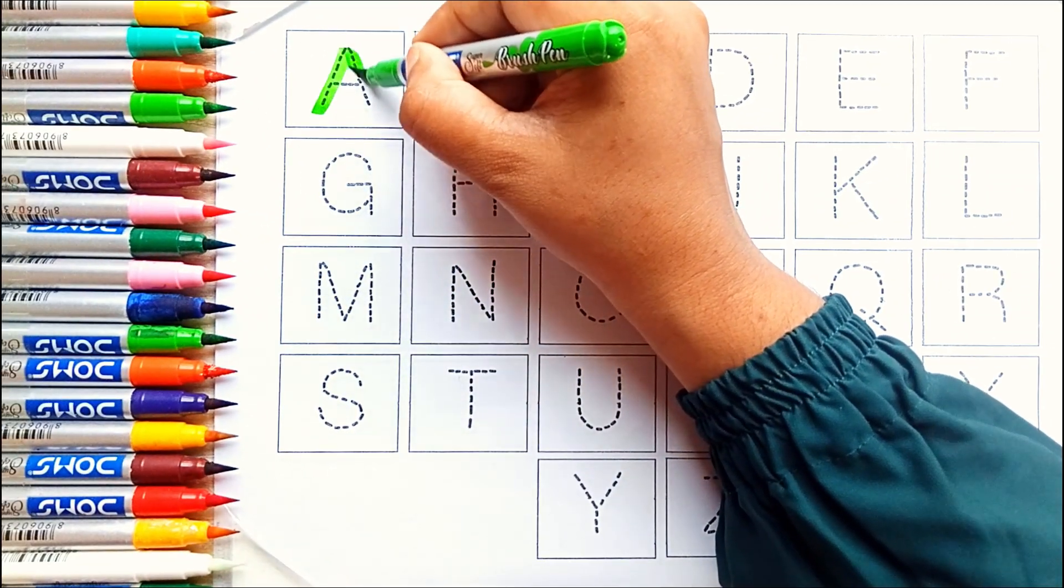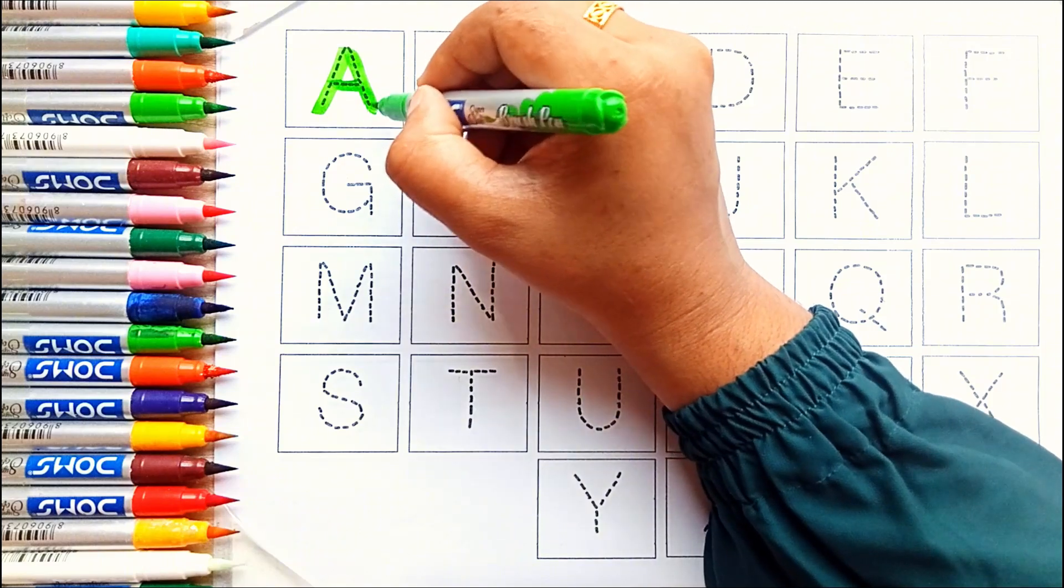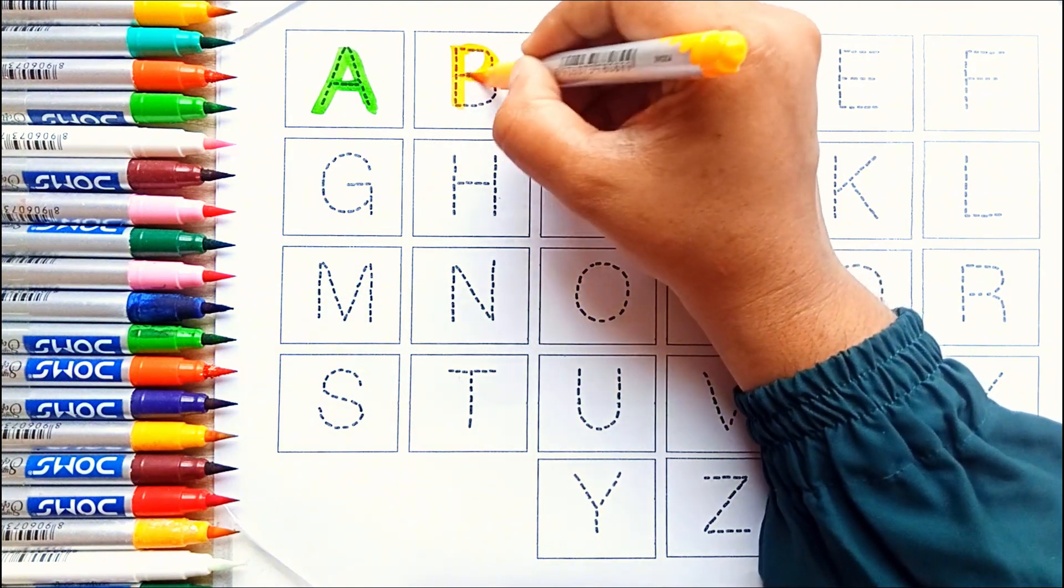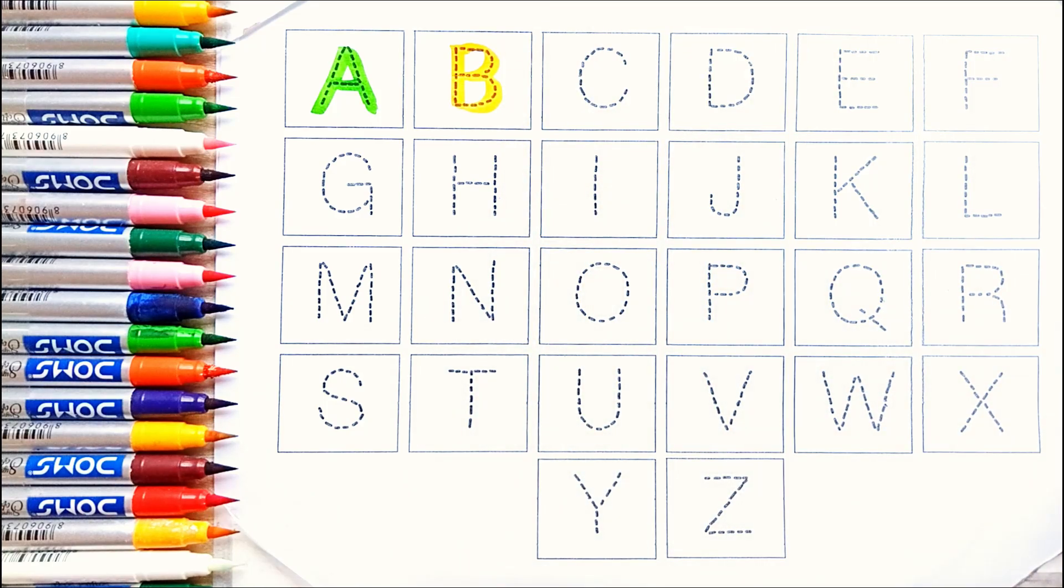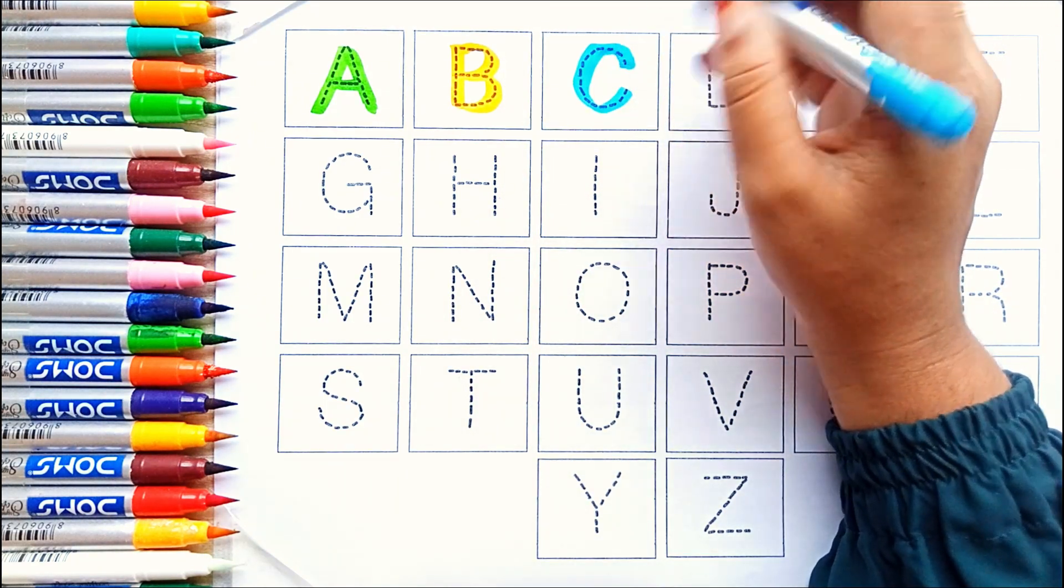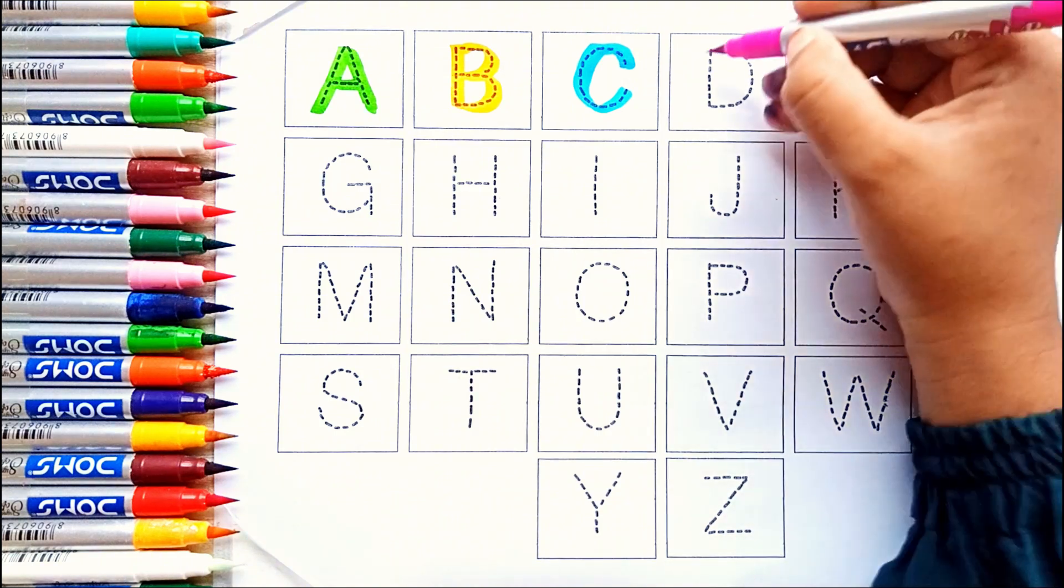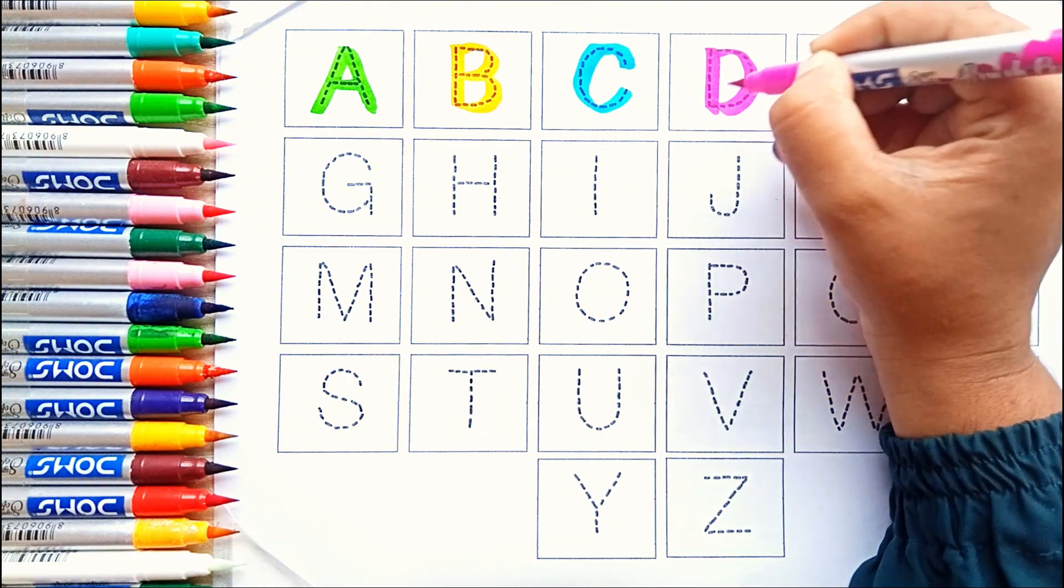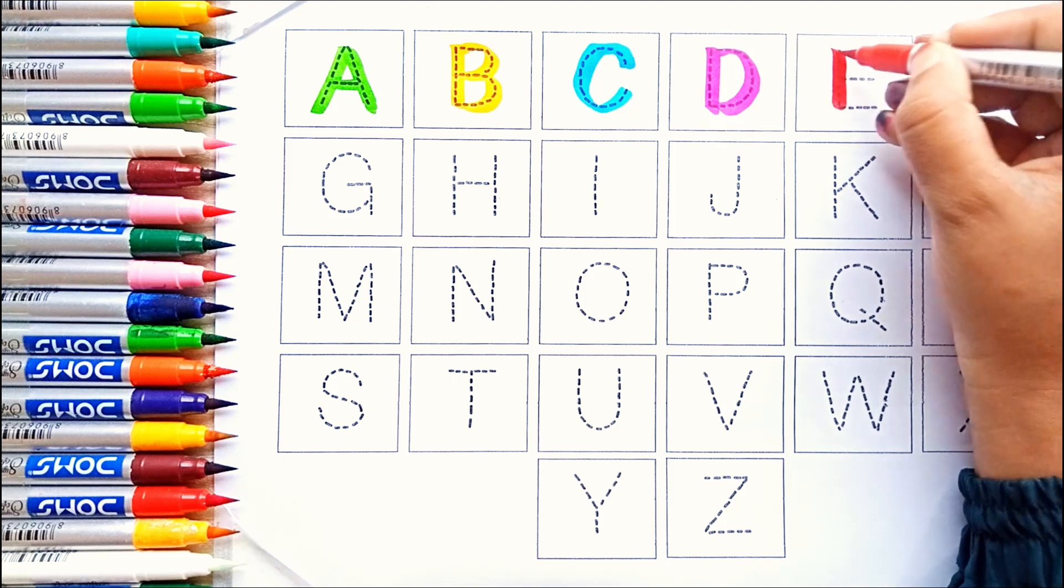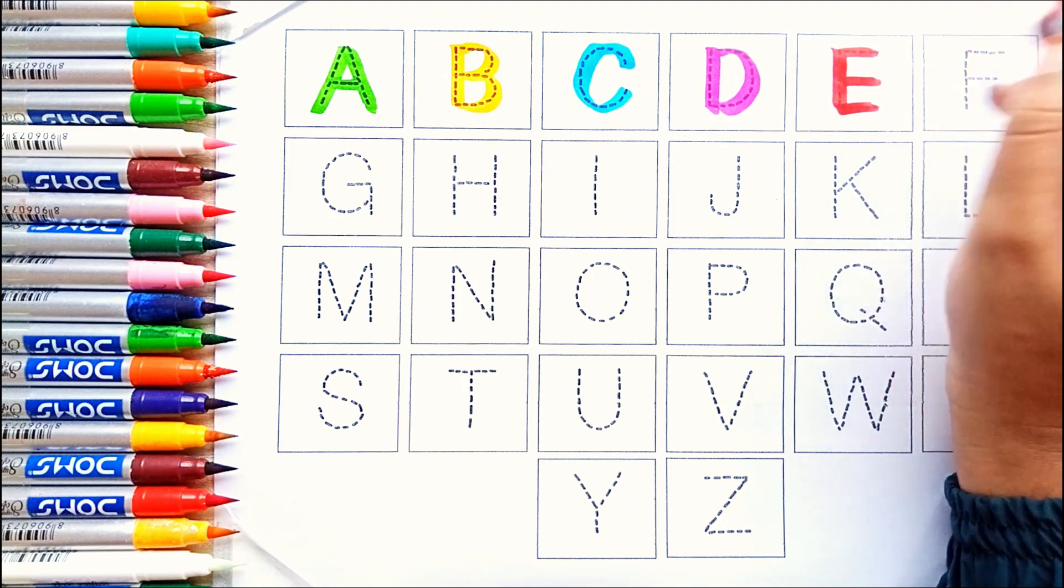I can color. A, for ant. Yellow color. B, for banana. Blue color. C, for cat. Pink color. D, for dog. Red color. E, for eagle.